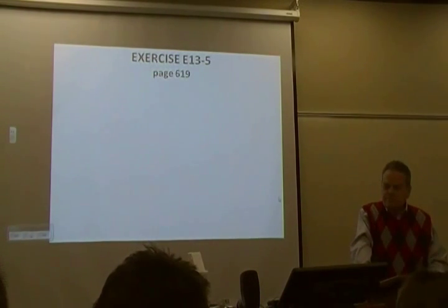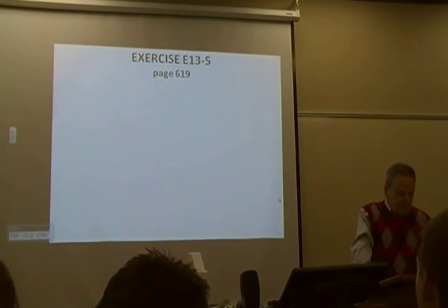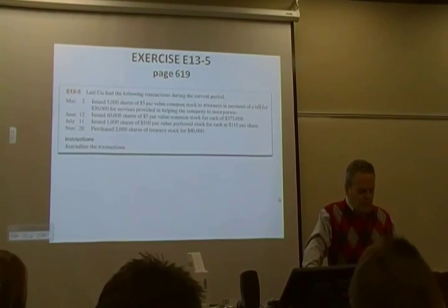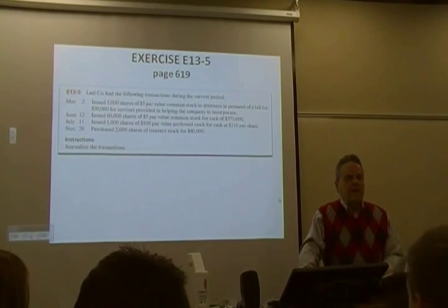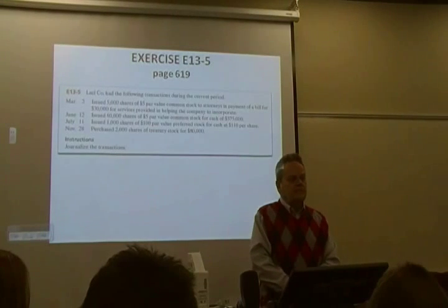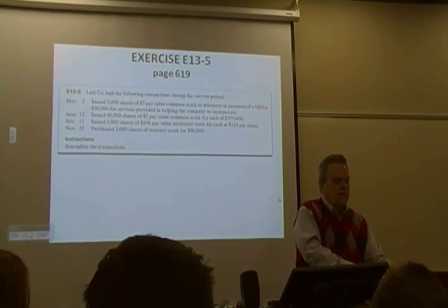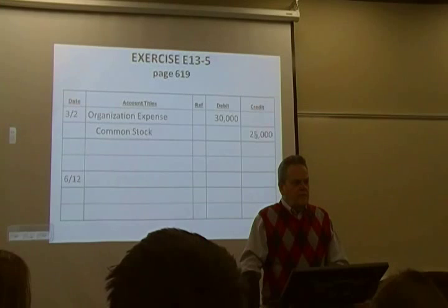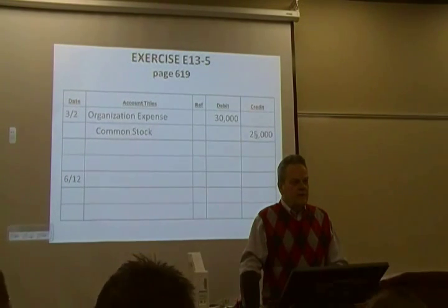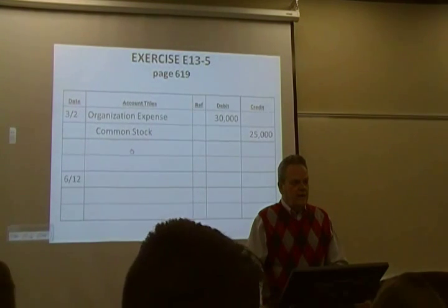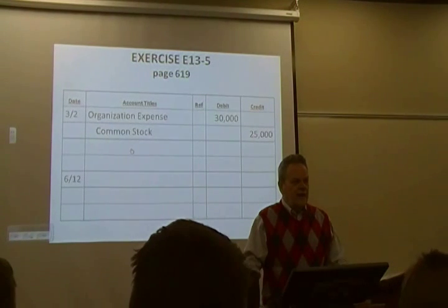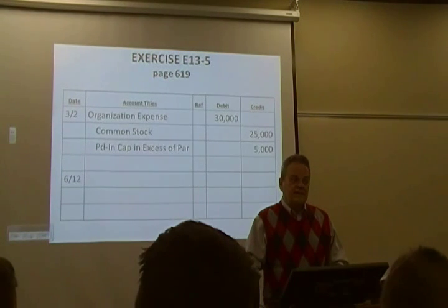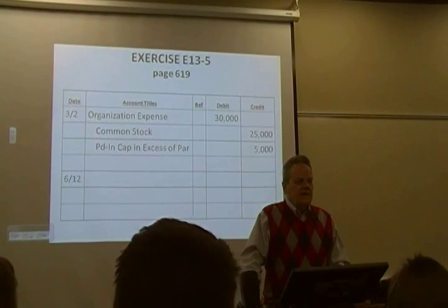Let's do exercise 13.5. The exercise says our company had the following transactions: issued 5,000 shares of $5 par common to attorneys in payment of a $30,000 bill for services in helping the company incorporate. Courtney: debit organization expense $30,000, credit common stock $25,000, and credit paid-in capital in excess of par for $5,000. Is that a good plug or bad plug? It's the only way you can do it, so it's a good plug.